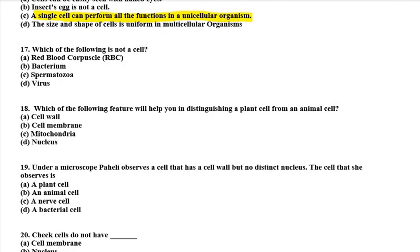Seventeenth question: which of the following is not a cell? A virus is not in the category of cells. A bacterium is a cell, RBC is a cell found in humans, and spermatozoa is a cell. Eighteenth question: which feature will help you distinguish a plant cell from an animal cell? The answer is cell wall — cell wall is an additional layer required by plants for protection.